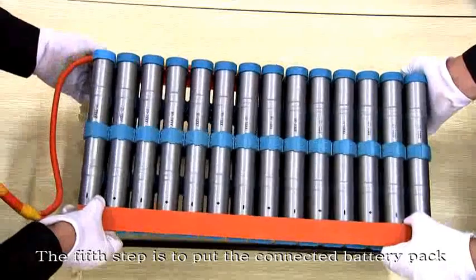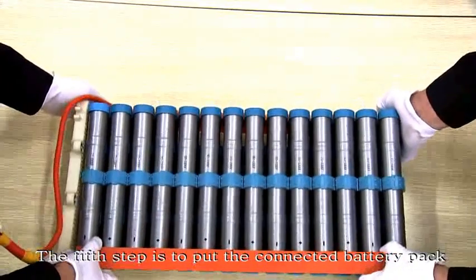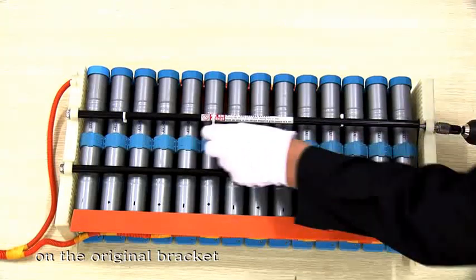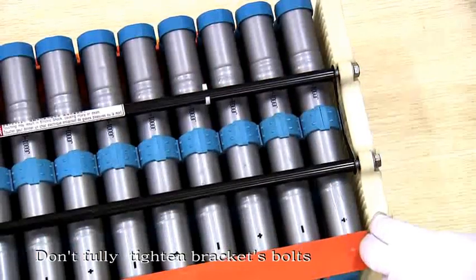The fifth step is to put the connected battery pack on the original blanket. Don't fully tighten the blanket boards.